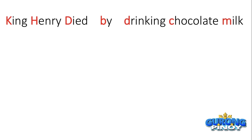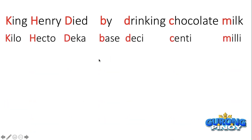The mnemonic we're going to use is: King Henry Died By Drinking Chocolate Milk. The first letters of each word stand for the different metric prefixes. K for Kilo, H for Hecto, D for Deka, B for Base, D for Deci, C for Centi, and M for Milli. So King Henry Died By Drinking Chocolate Milk stands for Kilo, Hecto, Deka, the base unit, Deci, Centi, and Milli.